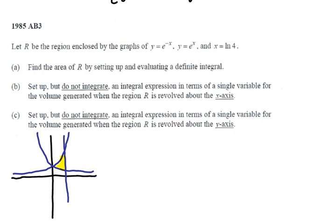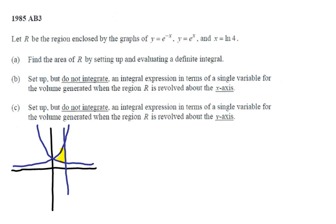Top minus bottom is just going to be e to the x minus e to the negative x, and so we're ready to roll. Okay, so we have area is the integral from 0 to ln of 4 of e to the x minus e to the negative x dx.